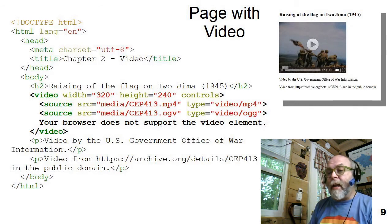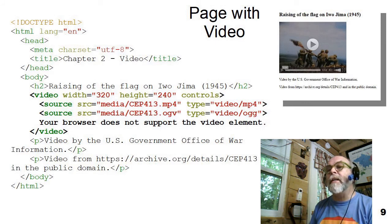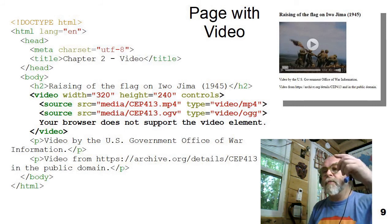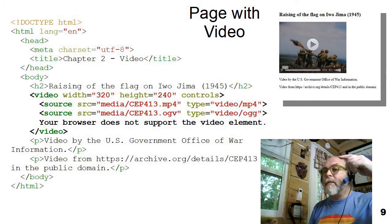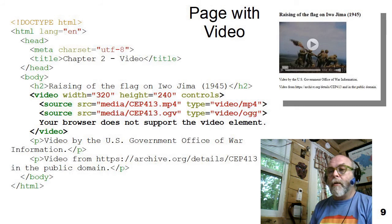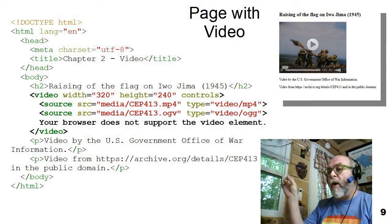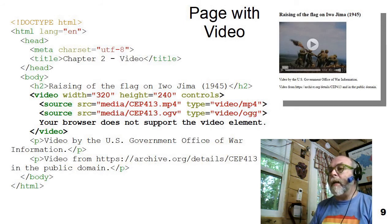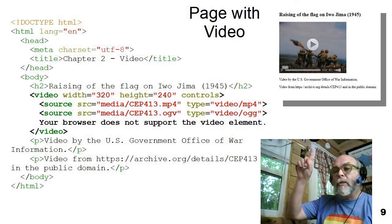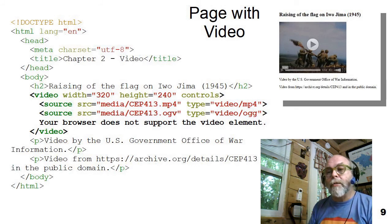Here I have a page with a video tag on it, showing a picture of the Marines raising the flag on Iwo Jima in World War II in 1945. You can see the video is provided as both an MP4 and an OGV file. The page displays the message 'your browser does not support the video element' if the browser lacks support. You can also see the attribution of where the video came from — the archives and the U.S. government Office of War. That's an example of what the video looks like on the page, and the audio tag works very similarly.